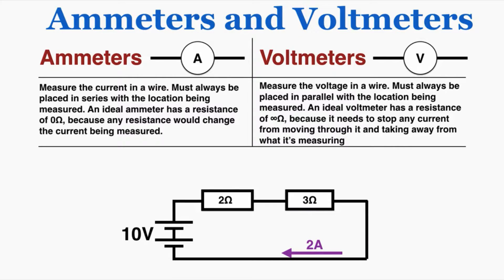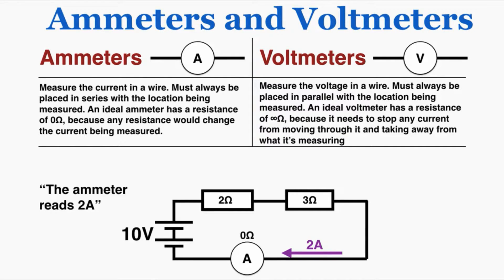Using V equals IR, the equivalent resistance of the circuit is 5, so the total current moving through the circuit is 2 amps. If I place an ammeter to measure the current, it needs to be in series with the rest of the circuit, because in series the current stays the same for all objects. So that 2 amps is also going through the ammeter. Because the ammeter is 0 ohms, the total equivalent resistance is still 5, the current is still 2, and so the ammeter reads 2 amps.